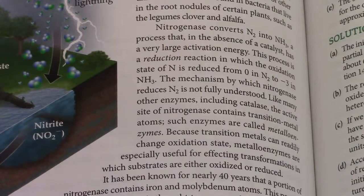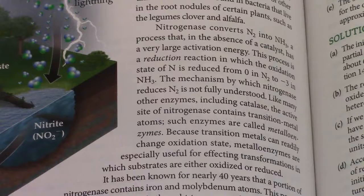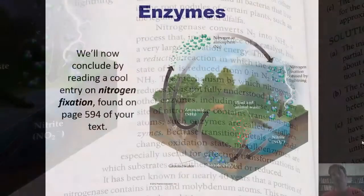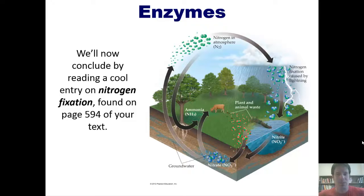I'll pause here because I've probably said enough. The bottom line is this: without the nitrogenase enzyme, the biosphere's ability to convert N2 — which is a virtually useless form of nitrogen — into NH3, which is a useful form of nitrogen, would not exist. And therefore, life on this planet would not exist. I am very grateful that we have enzymes in nature. This takes us to the end of this lecture and the end of this chapter. Please stay tuned for our next chapter. Until then, have an enjoyable rest of your day.